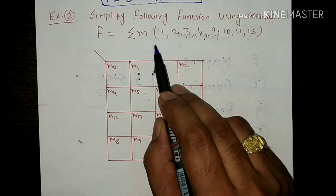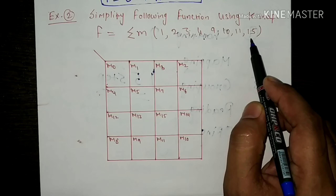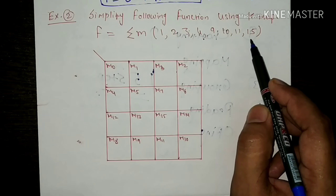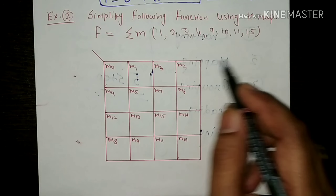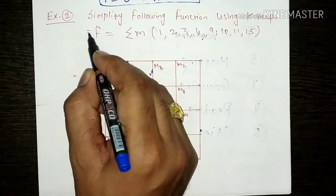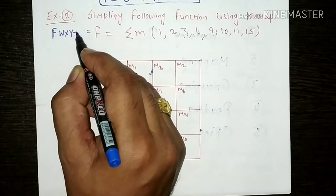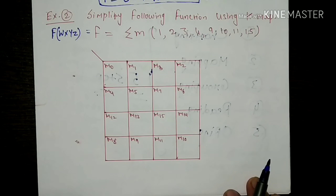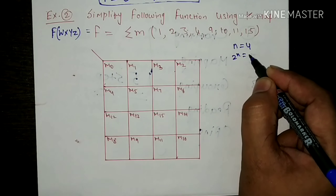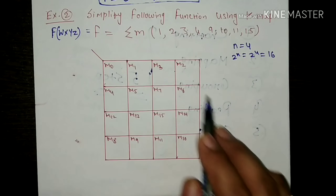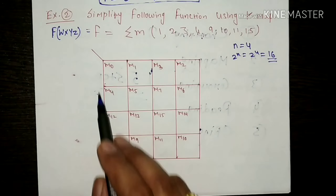The first thing - these minterms can have 16 combinations and the maximum minterm is 15, that means this function is a four variable function. So let us take the variables as F(W, X, Y, Z). We have four variables, that means n equals 4. So 2 to the power n equals 2 to the power 4, which equals 16. In this 4 variable KMAP, the number of cells are 16, so we have a 16 cell KMAP prepared.